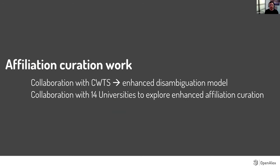Some of the affiliation curation work we've been doing: as CWTS was switching to considering a Leiden open ranking, they started analyzing our data in a way it hadn't previously been analyzed and exposing a lot of room for improvement in the dataset. We've been working very closely over the last year on making a lot of these improvements — one of those was getting more affiliation metadata, but another was enhancing our disambiguation model and matching with ROR IDs. A lot of work has already gone into that. One of the things we recently did — it started from one of these webinars maybe six months or so ago — we collaborated with 14 universities around the world to explore what enhanced affiliation curation could look like.